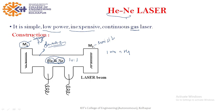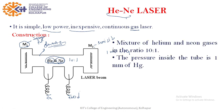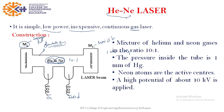Inside the quartz tube we maintain a pressure of 1 mm of Hg. We have electrodes — one is cathode, the other is anode — and we apply a potential of 10 kilovolts. The proportion of Helium and Neon is 10:1, and Neon is the active center.